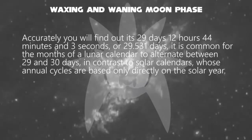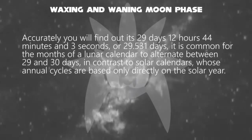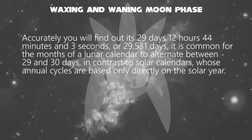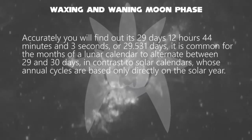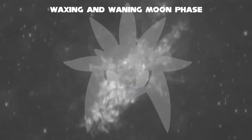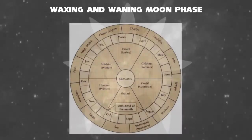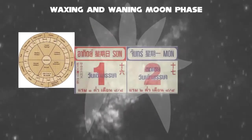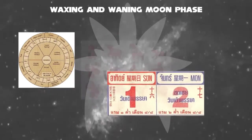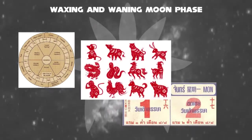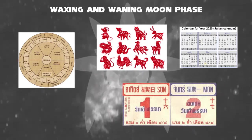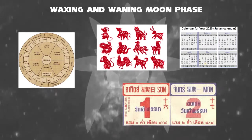Some traditional lunar and lunisolar calendars continue to be used throughout the world to determine religious festivals and national holidays, such as the Islamic calendar, Nepali calendar, Chinese calendar, Hindu calendar, and others.